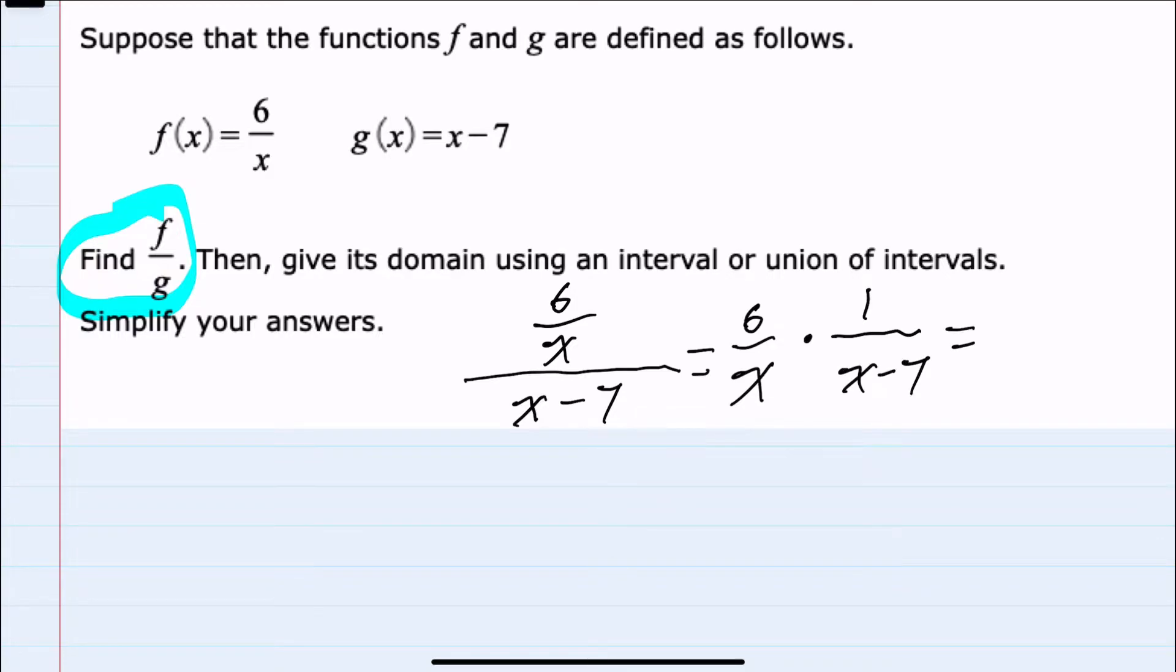So our simplified function f over g would just be 6 in the numerator and x times x minus 7 in the denominator. This would be our quotient.